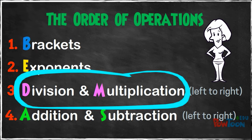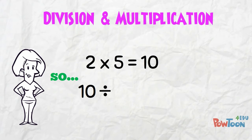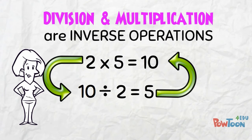You'll notice that division and multiplication are on the same line on this slide. I'm going to show you why. You know that 2 times 5 is 10, so you also know that 10 divided by 2 is 5. Multiplication and division are linked. They are inverse operations.